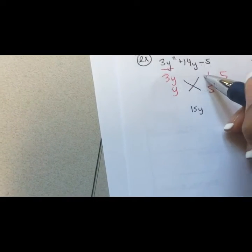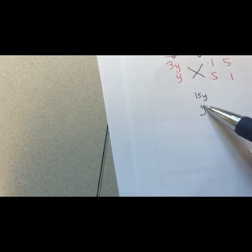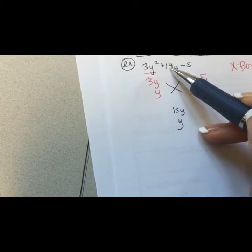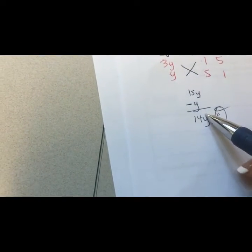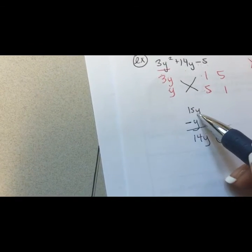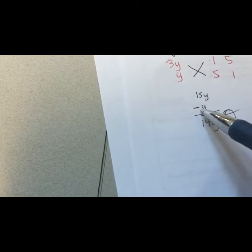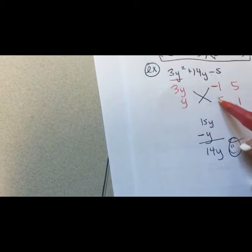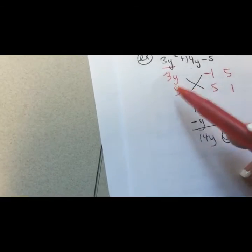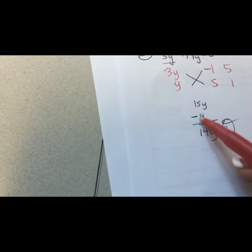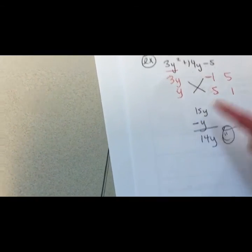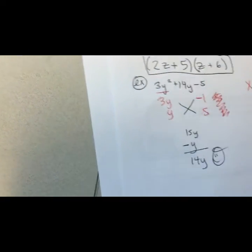I do my X and cross-multiply: 3y times 5 gives me 15y, and y times 1 gives me y. I ask: will any combination of adding or subtracting give me 14y? Yes — 15y minus y gives me 14y, which is what I want. So 3y times 5 gives 15y, but I need y times negative 1 to give me negative y, because negative y subtracted from 15y gives 14y. The negative goes on the 1.